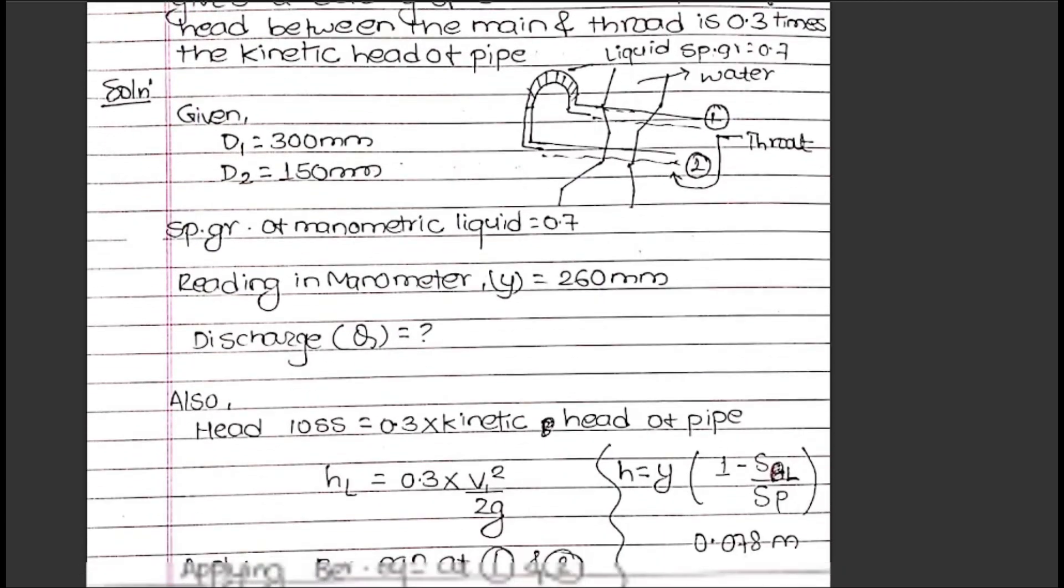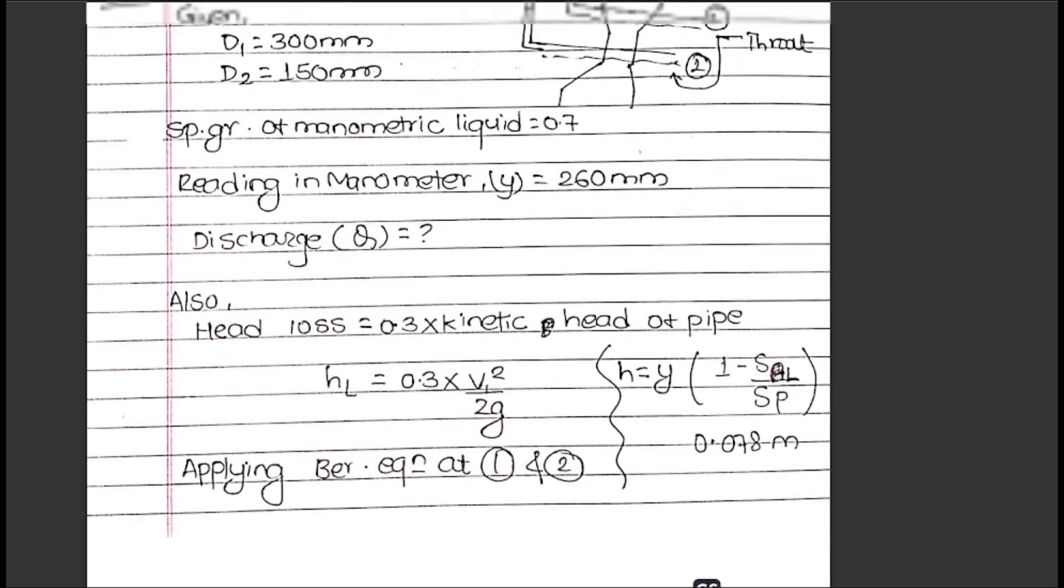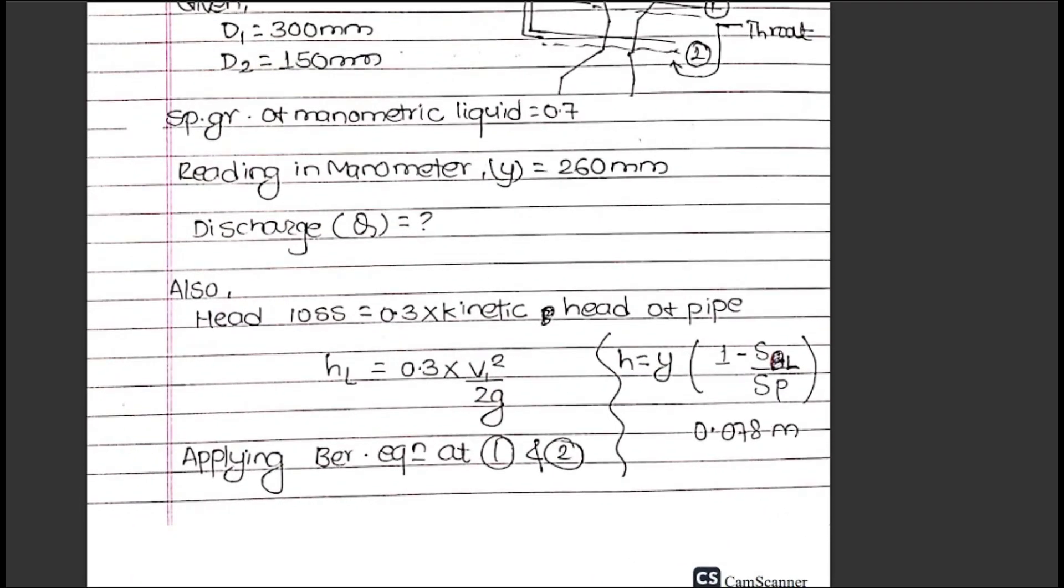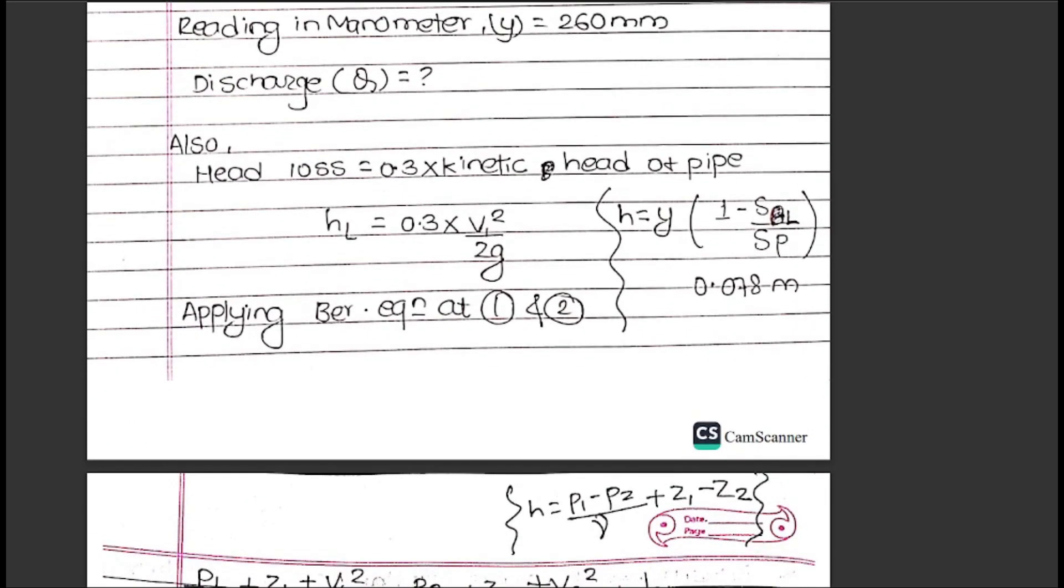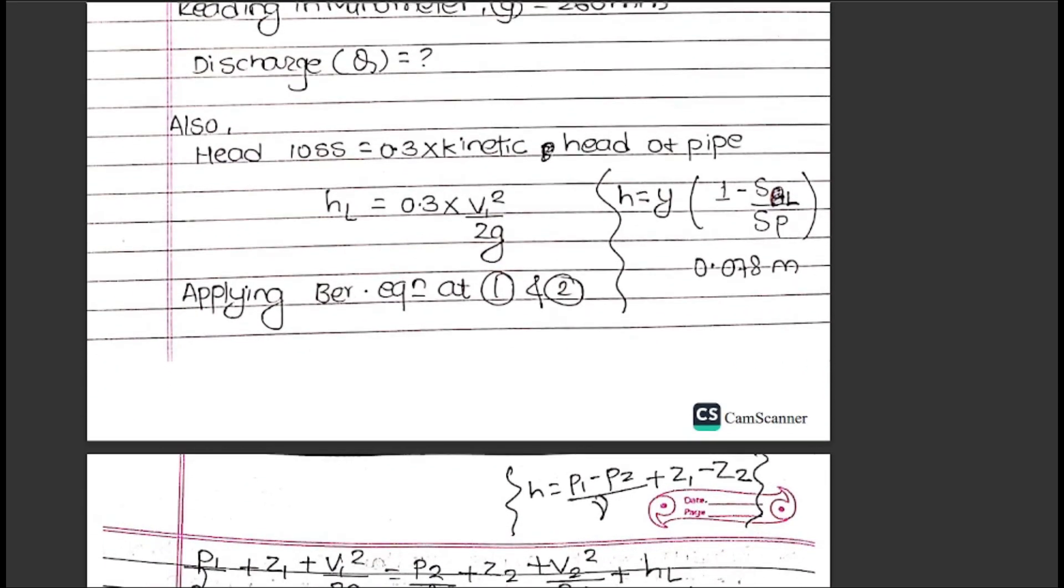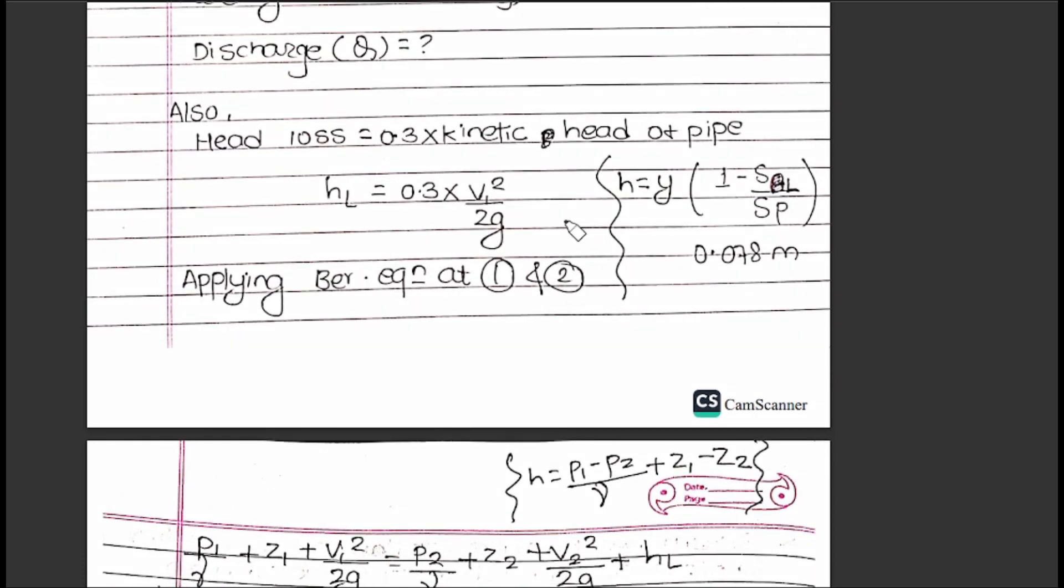The specific gravity of the manometric liquid is 0.7 and the reading in the manometer is 260 mm. The head loss is 0.3 times the kinetic head of the pipe, which is 0.3V₁²/2g.